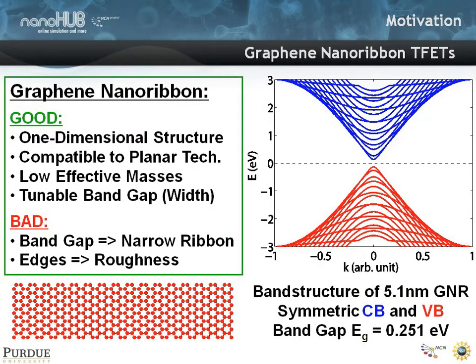Graphene offers the chance to build a band to band tunneling transistor. Because if you take graphene or a graphite sheet and make it into a thin ribbon — a graphene nanoribbon — your dispersion looks roughly as shown on the right. It allows you to have a gap. The gap does depend on the thickness of this graphene ribbon.